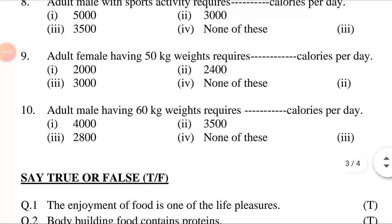Question 8: Adult female having 50 kg weight requires ___ calories per day. Options: first, 2,000; second, 2,400; third, 3,000; fourth, none of these. Answer is second option: adult female having 50 kg weight requires 2,400 calories per day.